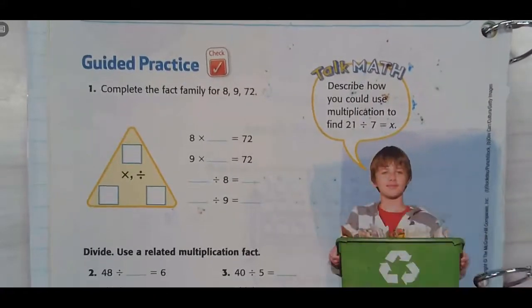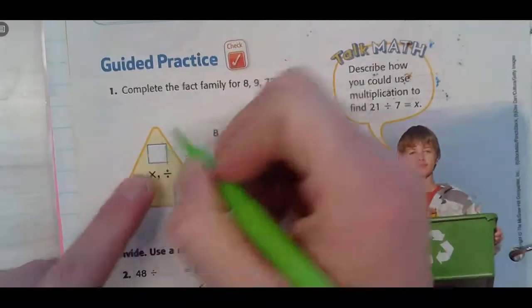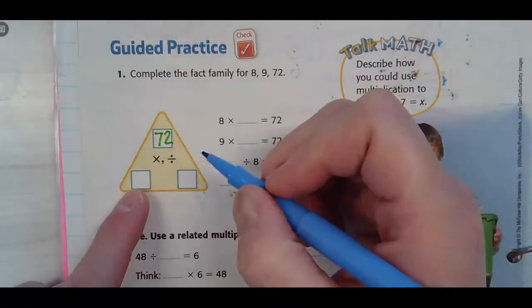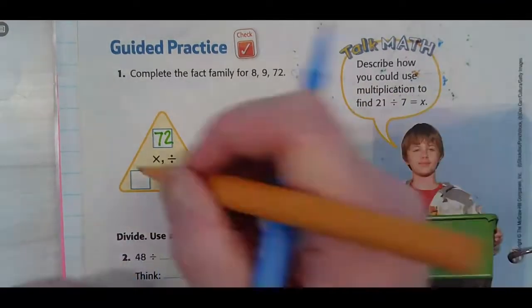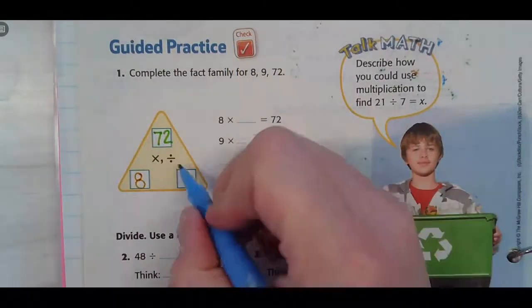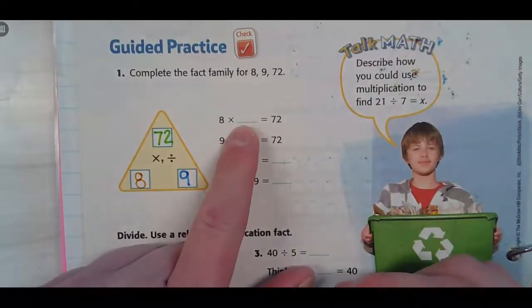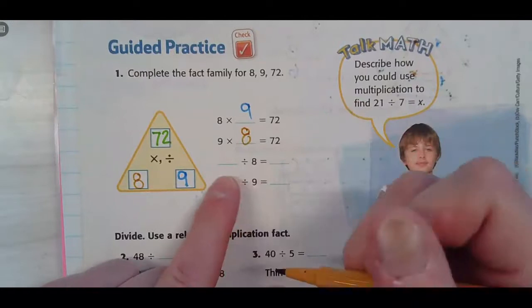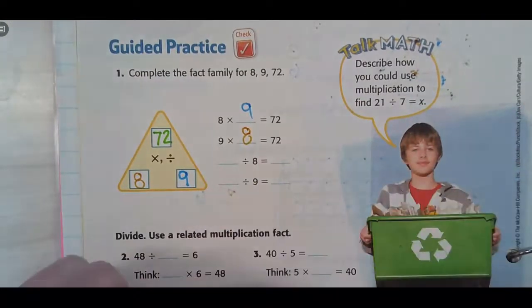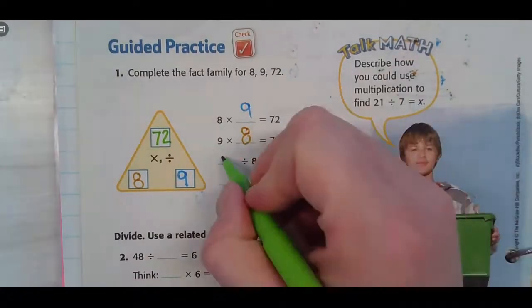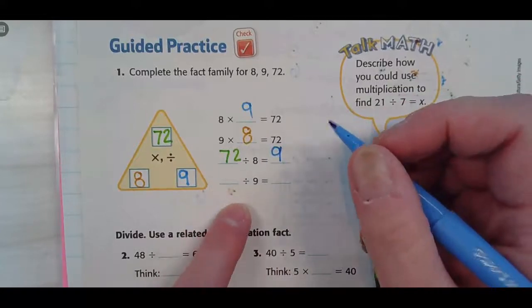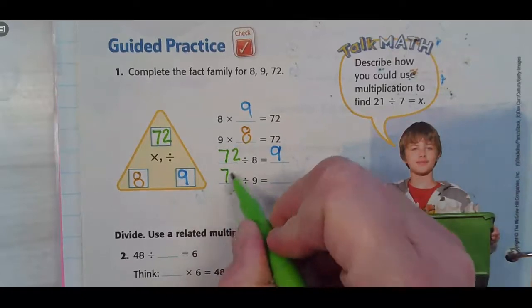Guided practice. Why did they just give us this one for us? Oh, well. We can rock it off. So, what goes at the top? 72. And then, what's going to go in one of these spots? Eight. So, it's going to go in one. What's going to go in the other one? Nine. So, eight times nine is 72. Nine times eight is 72. Something divided by eight is nine. 72 divided by eight is nine. And then, something divided by nine. Look at you guys rock and roll.